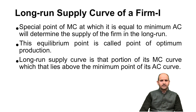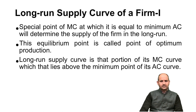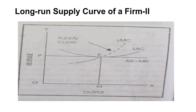The long-run supply curve is that portion of the MC curve which lies above the minimum point of the average cost curve. Just as in the short run, the MC curve above the AC curve (shown as a dotted line) is the supply curve of the firm, similarly in the long run the supply curve is that portion of the MC curve that lies above the minimum point of the average cost curve.